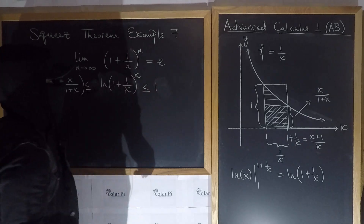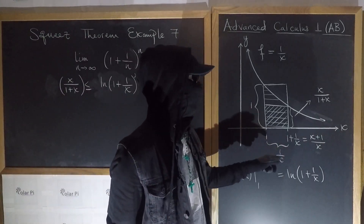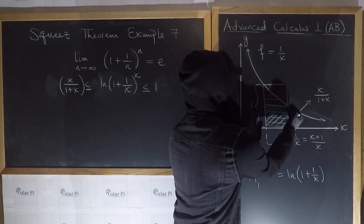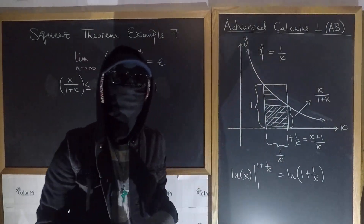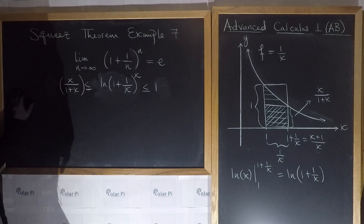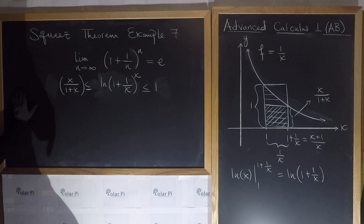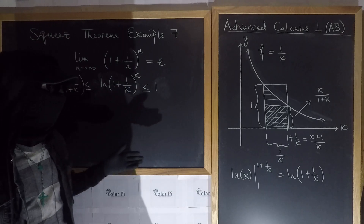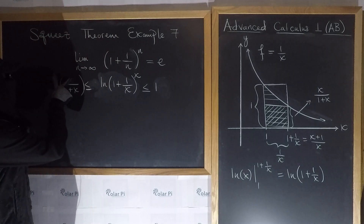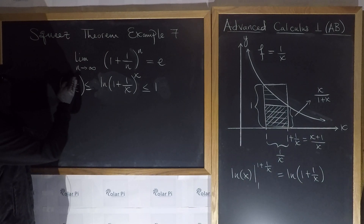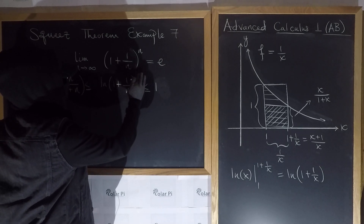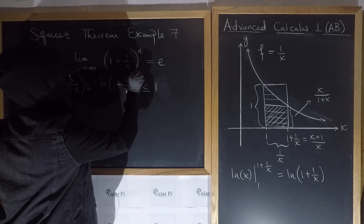I can actually put less-than-or-equal-to signs here because as x goes to infinity, 1 plus 1 over x goes to 1, so the rectangle gets thinner and thinner until the under-approximation, exact area, and over-approximation all become equal. Since this inequality holds for all positive real numbers x, it must hold for natural numbers n as well. So we can replace all the x's with n's.